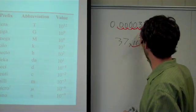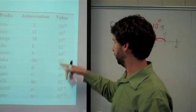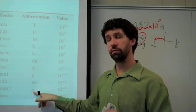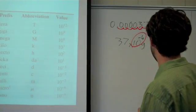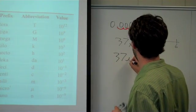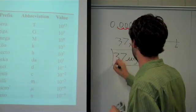And now all we're going to do is convert this into a prefix. Well, negative six down here is micro. So that means we're going to replace and say we have 37 micrograms. That's our answer.